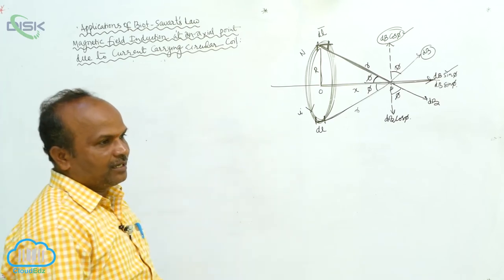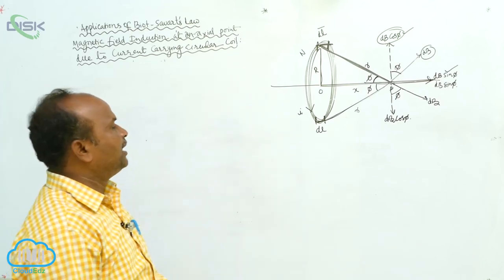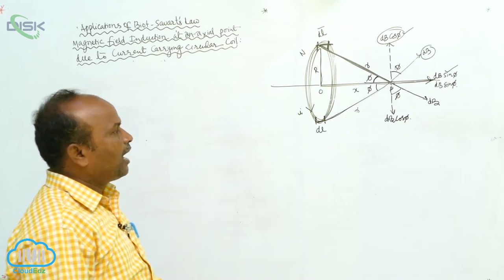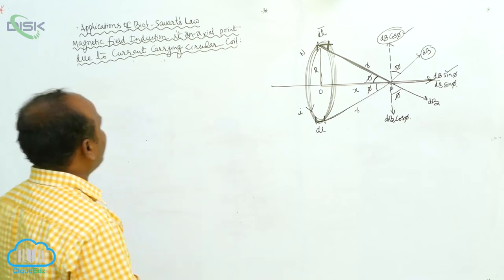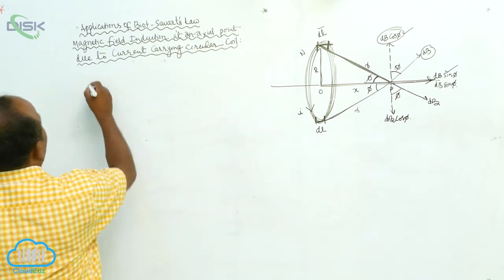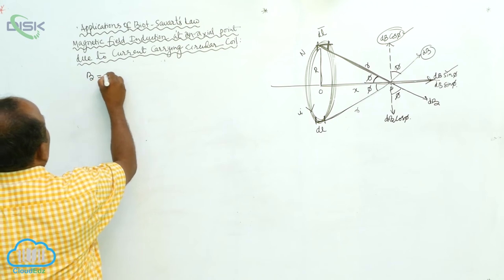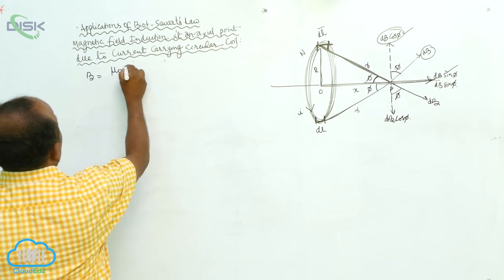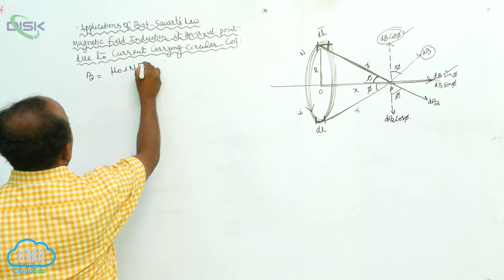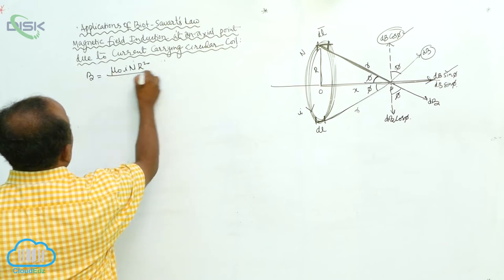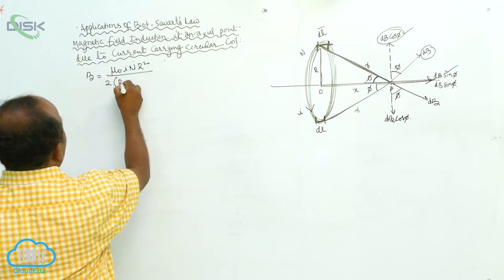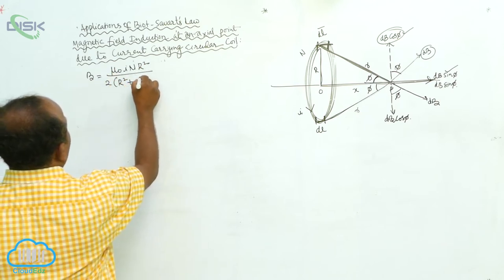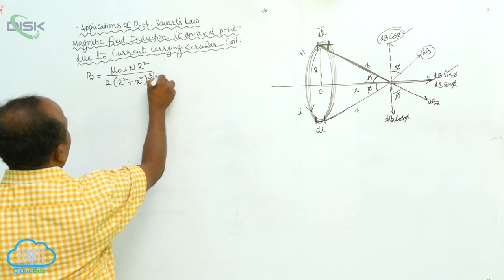The magnetic field induction due to a current carrying circular coil on the axial point is given by: B = μ₀inr² / [2(r² + x²)^(3/2)].